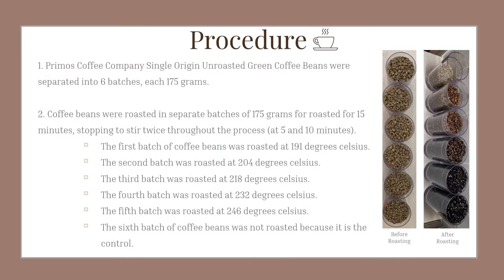I separated green coffee beans into six batches, each of 175 grams. Then I roasted the batches for 15 minutes, stopping to stir at 5 minutes and 10 minutes throughout the process. The first batch was at 191 degrees Celsius, the second 204 degrees Celsius, the third 218, the fourth 232, the fifth 246 degrees Celsius, and the sixth batch of coffee beans was not roasted, as it was the control.